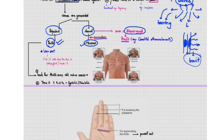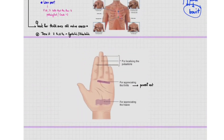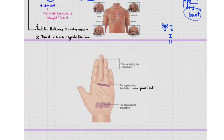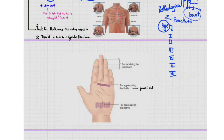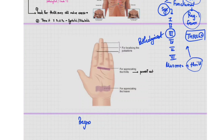The significance of thrill is important in grading systolic murmurs. Systolic murmurs can be both pathological and functional — they can be present in normal physiological conditions like pregnancy or fever. However, if the patient has a murmur plus a thrill present, the murmur is grade three or more and is always pathological. So if a pregnant female with a systolic murmur also has a thrill present, it is pathological and requires a cardiac referral.